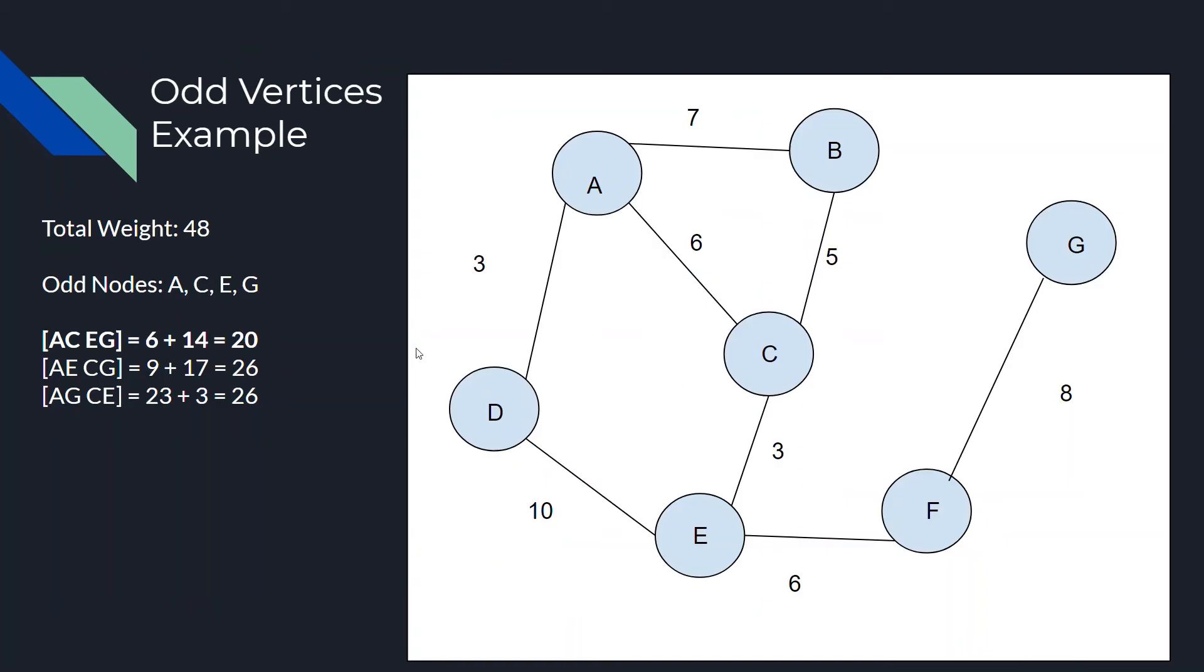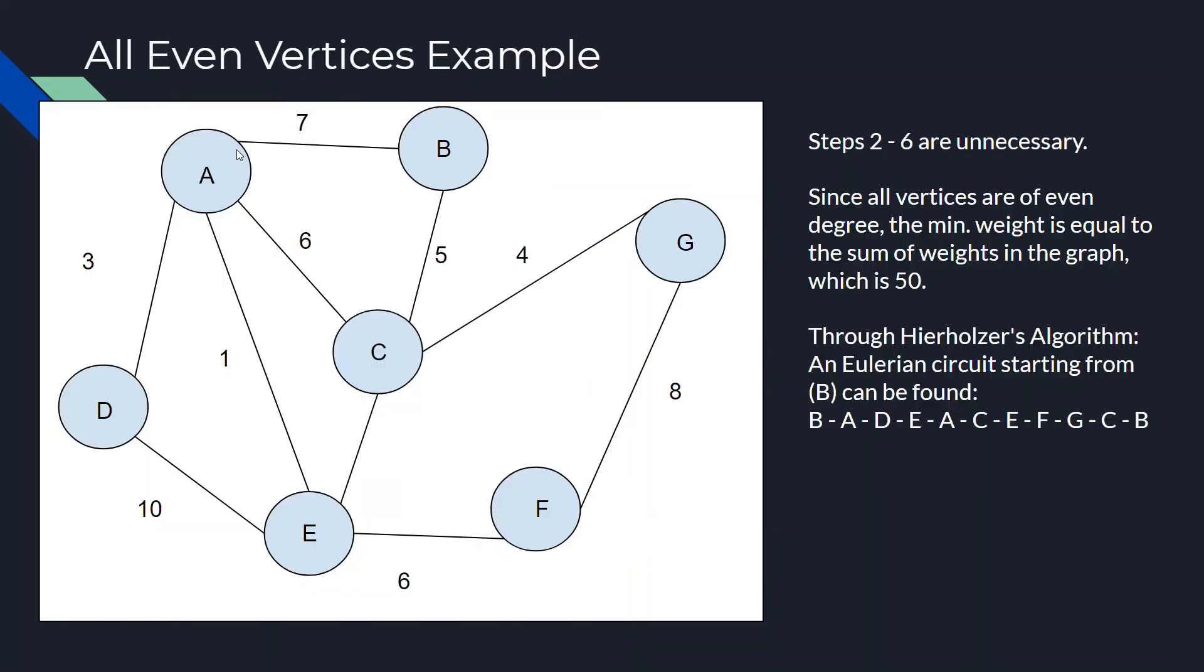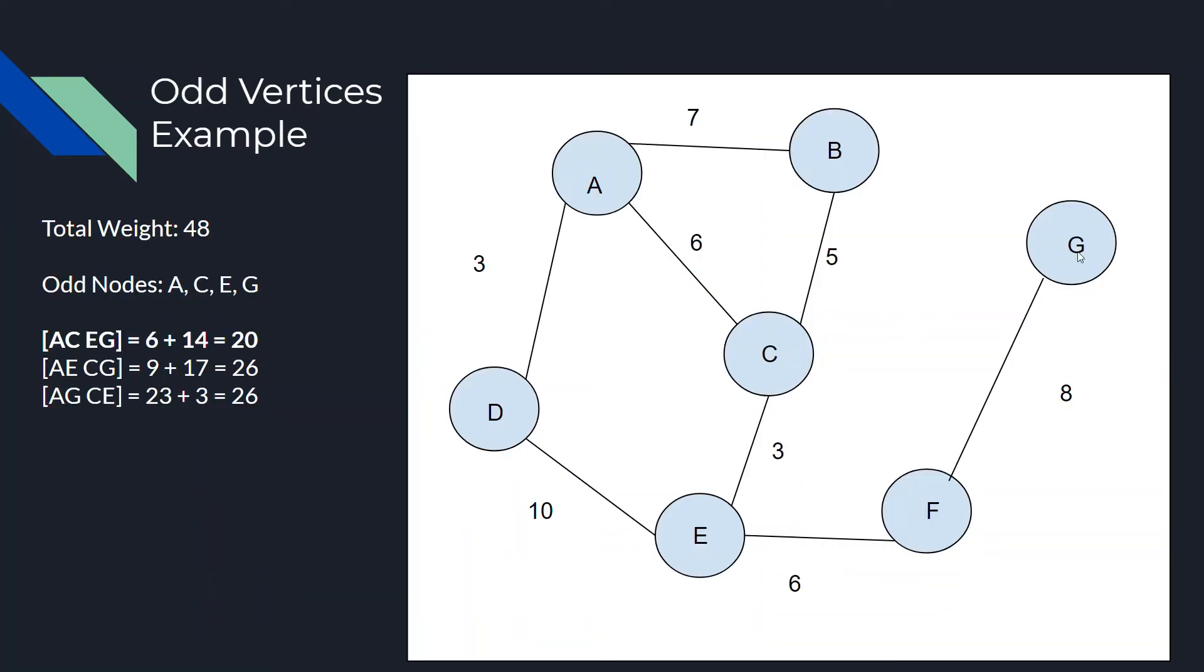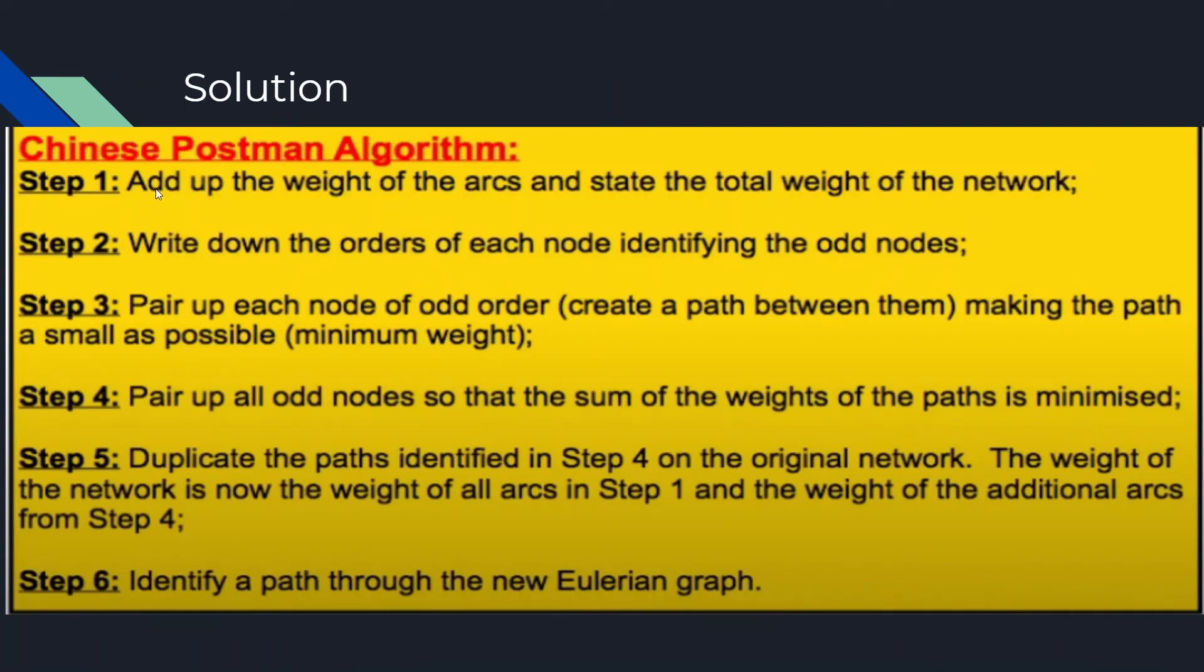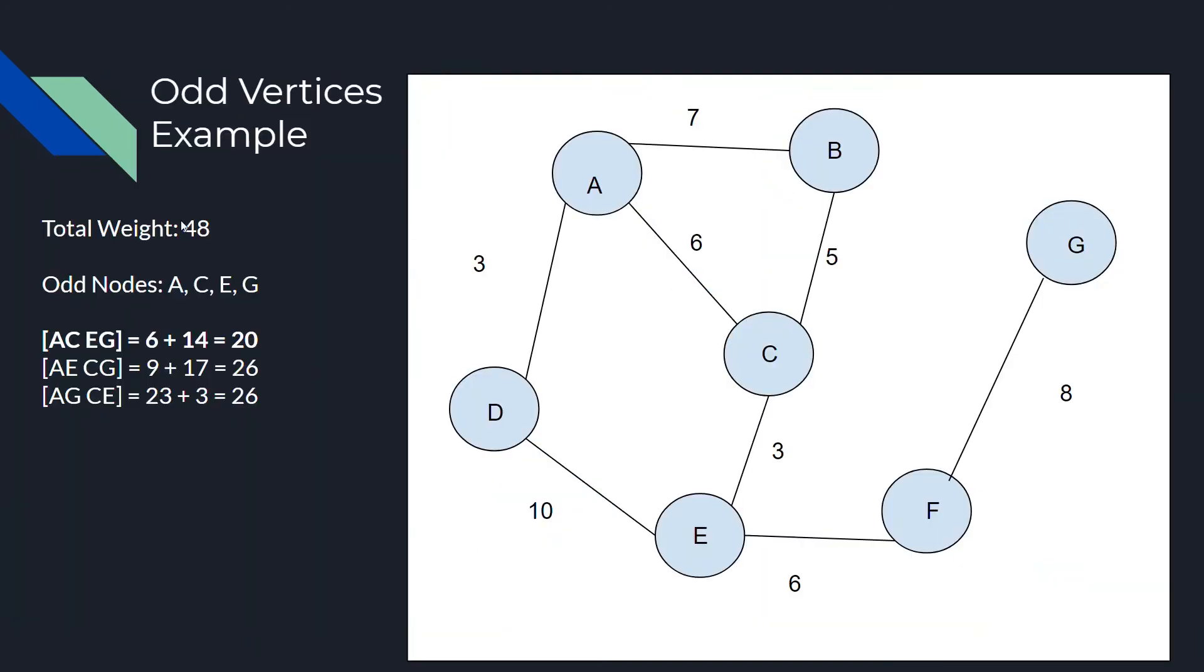So, let's go into a little bit of a harder example, the odd vertices example. So, if you'll notice, the edges that I have removed are A, E, and I believe I have removed C, G as well. So, those are gone. So, let's go through the steps. So, step one states that we must add up the weights of the arcs and state the total weight of a network. So, the total weight adding all these numbers together is 48.